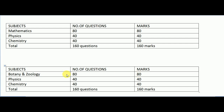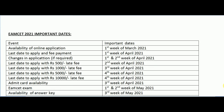Coming to Physics, you will be having 40 questions in the question paper and 40 marks. Coming to Chemistry, the question paper will contain 40 questions and 40 marks. So totally you will be having 160 questions for 160 marks.